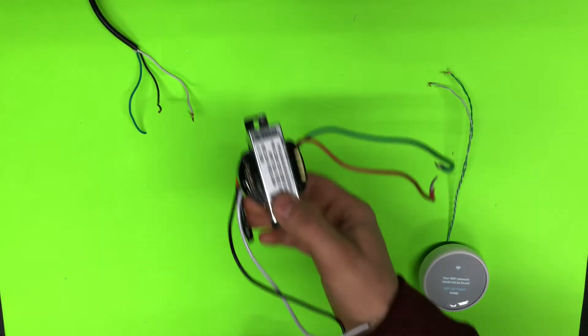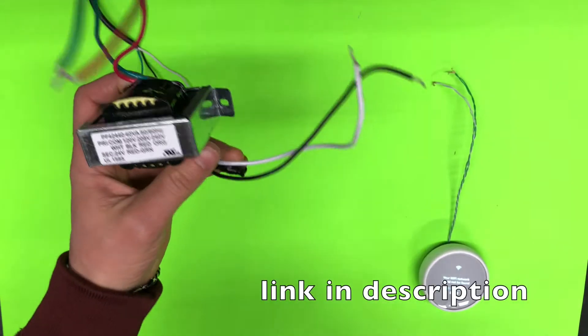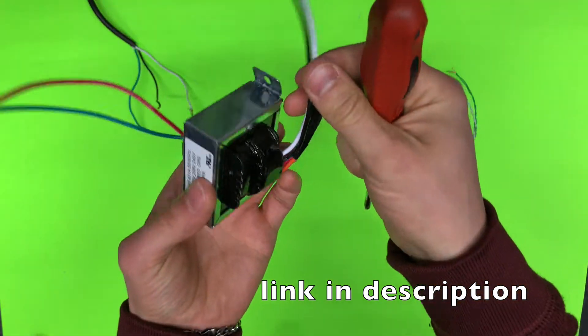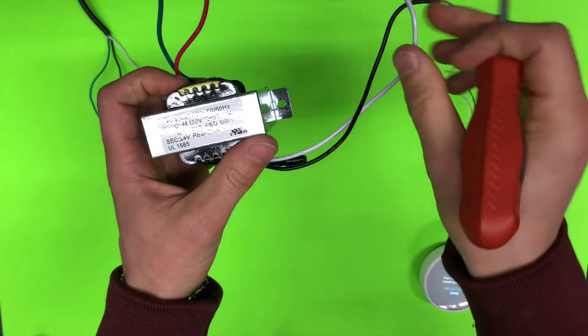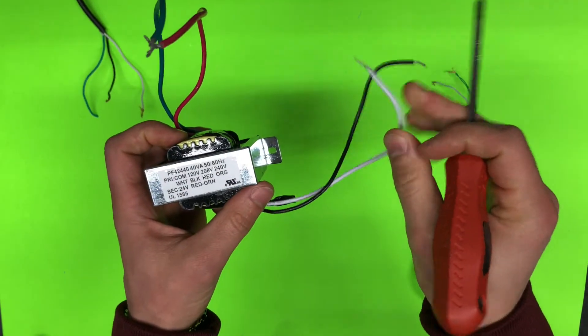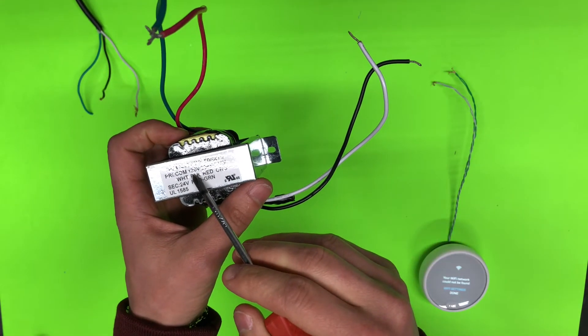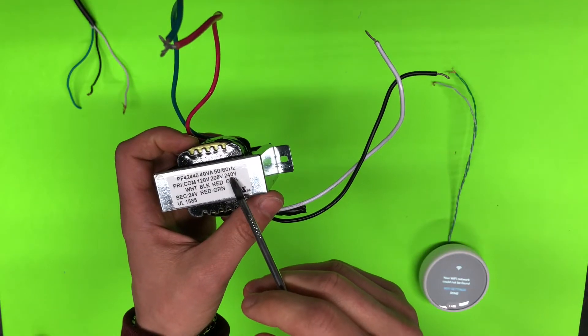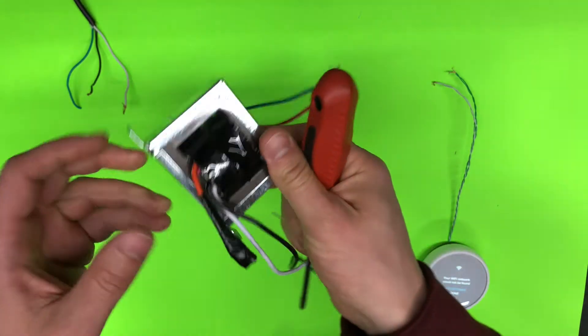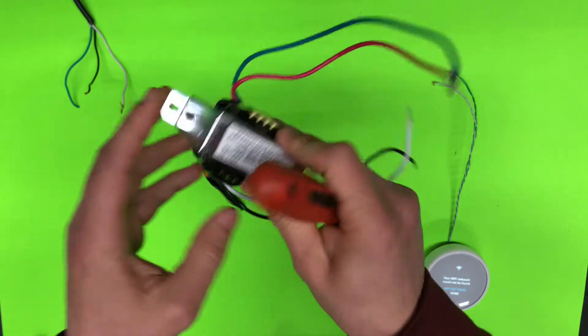So next step, we will need a transformer. In this transformer for input we have four wires. Color code is white is common input, black is for 120 volts, this is what I'm going to use. Red and orange is for 208-240 volts, I'm not going to use it, so I just cut it and isolate this.